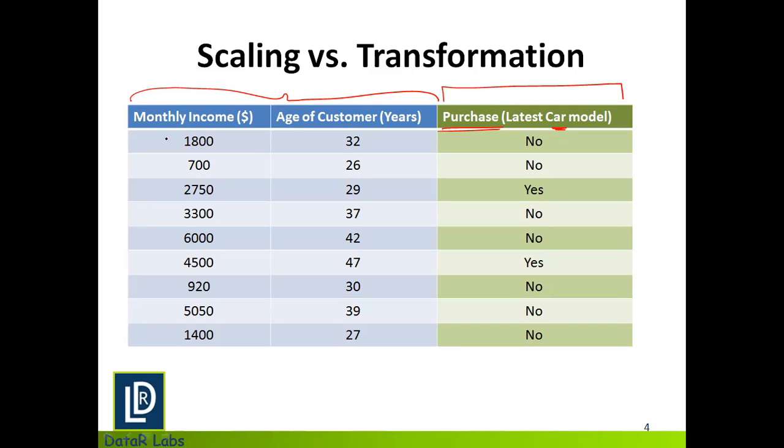Now if I try to scale, if I try to do a simple scaling on my numerical data in order to bring them to the same scale or same range, I would probably go to monthly income and just divide this monthly income by a factor of probably 100. So if I do that, the values I get are something like this. Now if you see, initially the range in monthly income was right from 700 to 6,000, which has now become from 7 to 60, as compared to the range of age of customers where it is starting from 26 and goes up to 47.